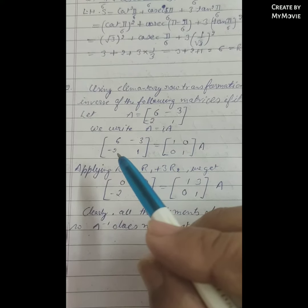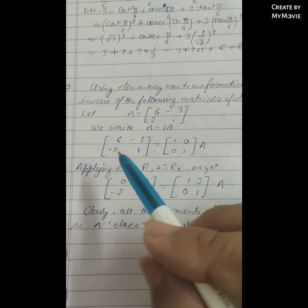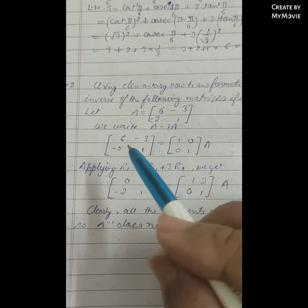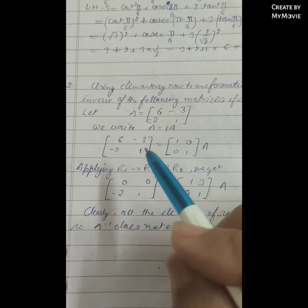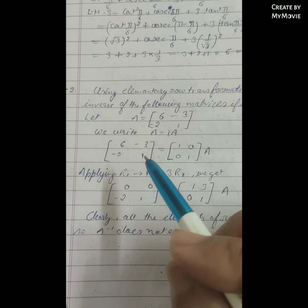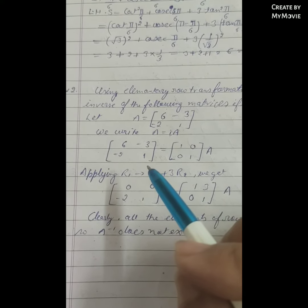First element: 6 plus 3 times (-2) equals 6 minus 6 equals 0. Second element: -3 plus 3 times 1 equals 0.